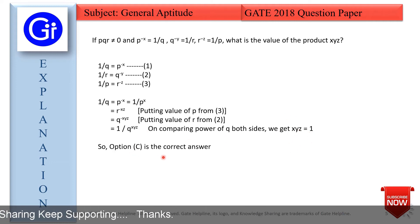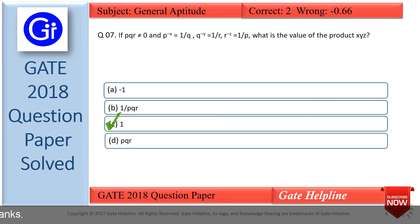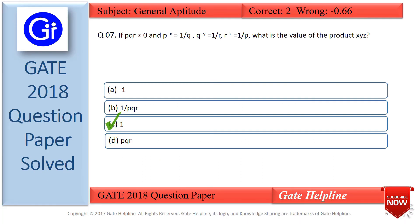So option C is the correct answer. As per our explanation, the product XYZ is equal to 1.